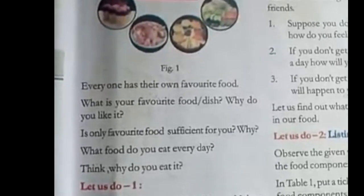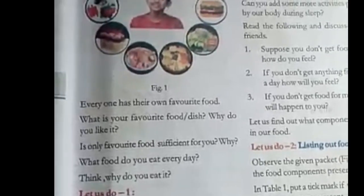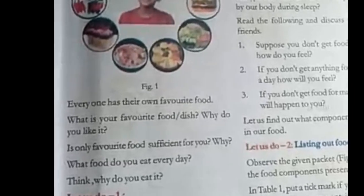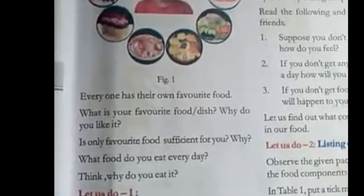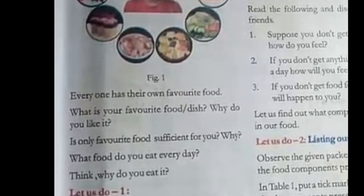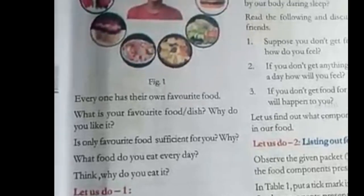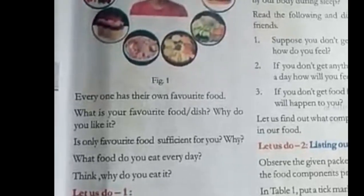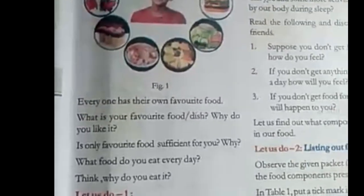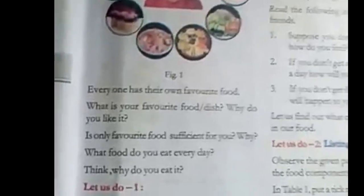Food consists of components — carbohydrates, proteins, fats, vitamins, and minerals. No matter what your favorite food is, it is going to have certain food components. Some food items you may like or dislike, but they all contain food components.